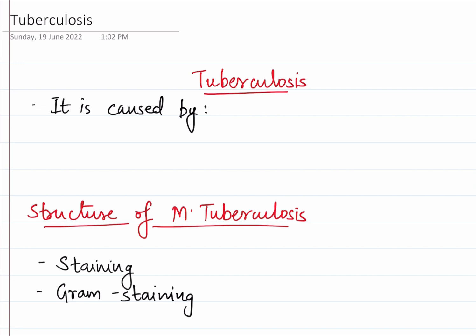So let's start. The causative organism for tuberculosis is, as we all know, Mycobacterium tuberculosis. That's the first and most common organism. There is another species as well, which is Mycobacterium bovis.